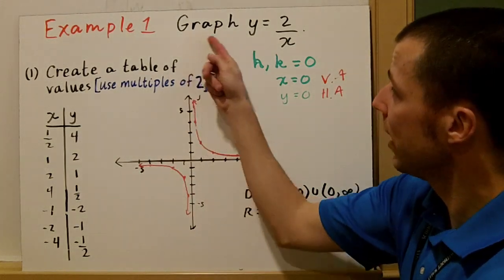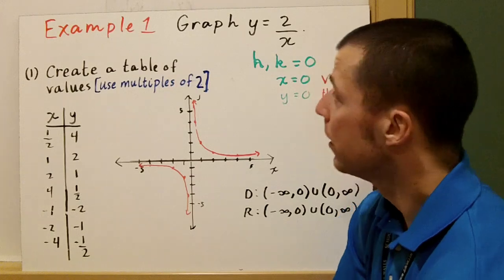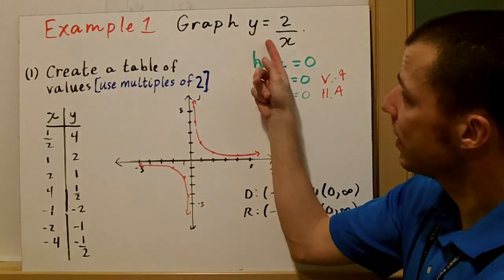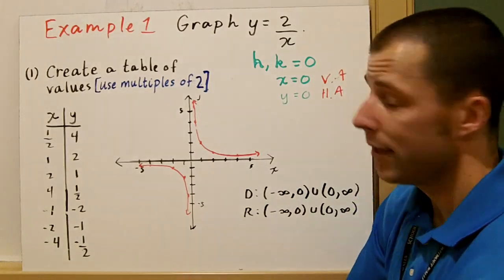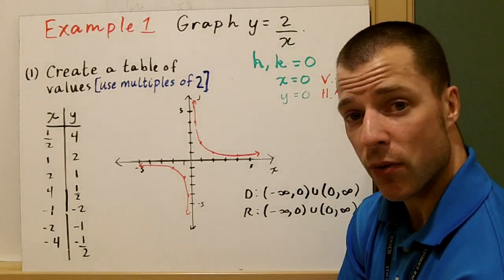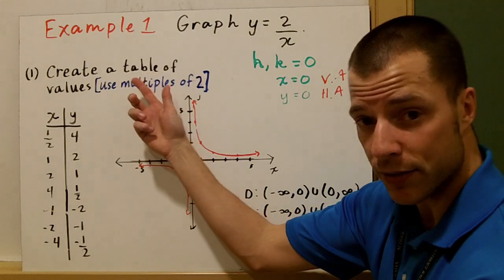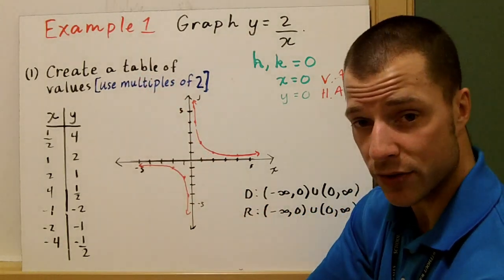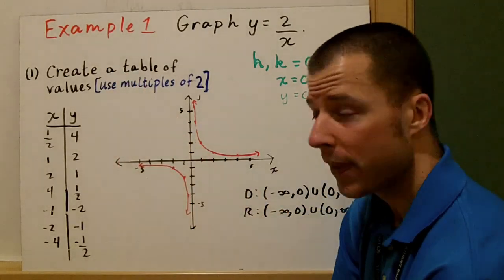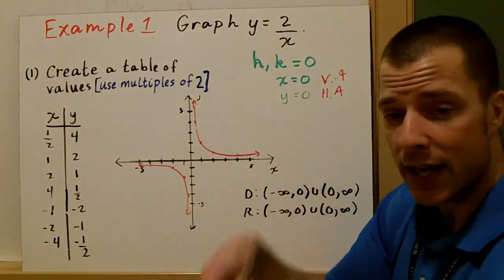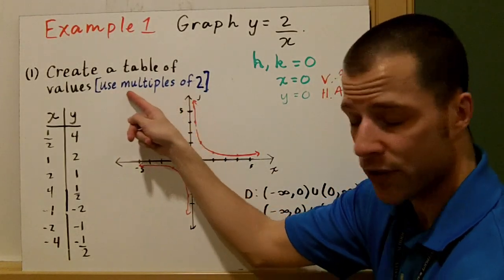Here's our first example: graph the function y equals two over x. This should look like inverse variation from section 8.1, and it is. The first thing you want to do is create a table of values or identify your asymptotes — either order is fine. I chose to make the table first. Looking at the function, a is equal to two, so I want to choose multiples of two.